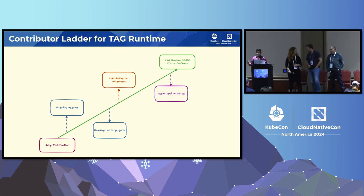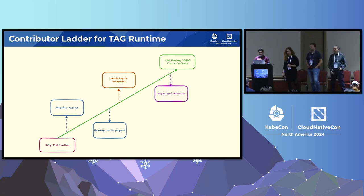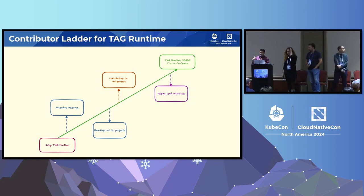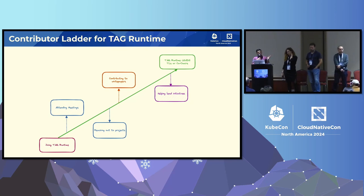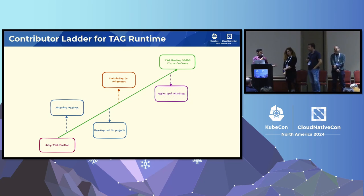Eventually you may find a working group, or help contribute to white papers that the technical advisory group comes up with. This leads you to starting to lead initiatives — helping with TAG Runtime at KubeCon, helping start a new working group, or helping get a white paper published. There are multiple areas where one can contribute. And eventually, once you show up and help contribute, you can be one of the chairs or one of the tech leads. Stephen, for example, met us at KubeCon Chicago, ended up at one of these meetings, and by KubeCon Paris he was one of the chairs for TAG Runtime. Kudos to you, Stephen.